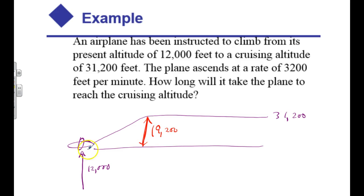So first of all, I know that he's at 12,000. He starts here. He's got to get up to 31,000. So I know that the distance that he needs to climb is 19,200. The next thing I see is they give me a rate, a rate of 3,200. So notice, they gave me distance, they gave me rate. So that's a sure sign. I'm probably going to use distance equals rate times time.